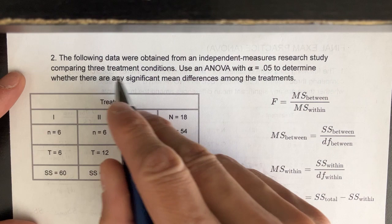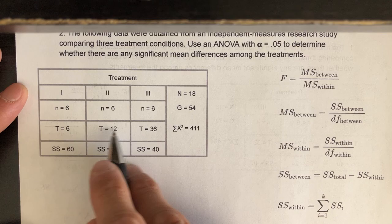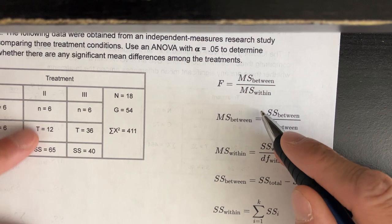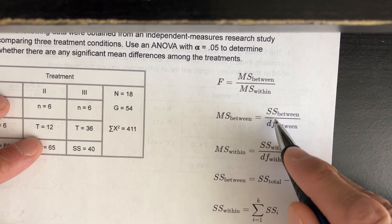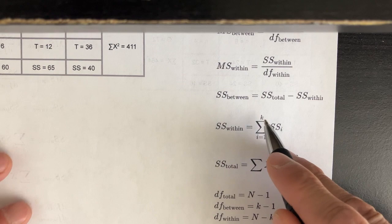This is another example of an ANOVA. The setup is the exact same as in the last example, so I'm not going to go over that. The only things that have changed are some of the numbers and the treatment conditions. We're going to be comparing three different treatments, and this is our end product — the F statistic — but we're going to have to figure out the various components. I've defined all the formulas here.